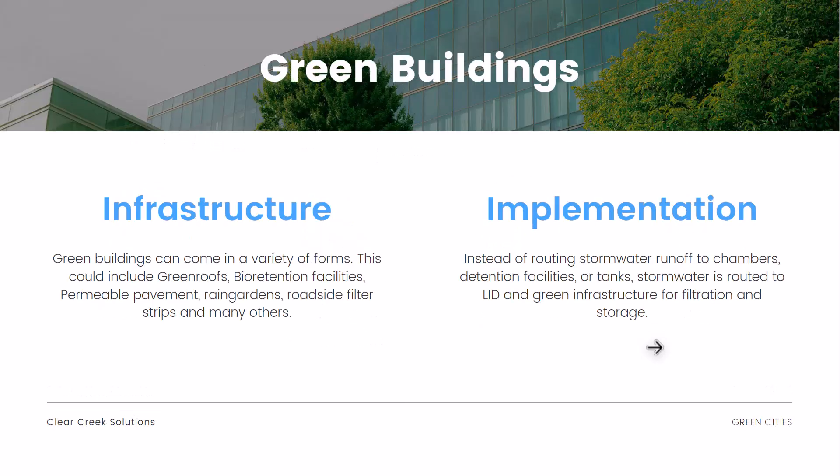What are green buildings? We've covered LID before — you can find those videos on our channel. Green infrastructure and green buildings can come in a variety of forms, including green roofs, bioretention facilities, permeable pavement, rain gardens, roadside filter strips, and many other kinds. Instead of routing stormwater runoff to chambers, detention facilities, or tanks, stormwater is routed to LID and green infrastructure for future filtration and storage.